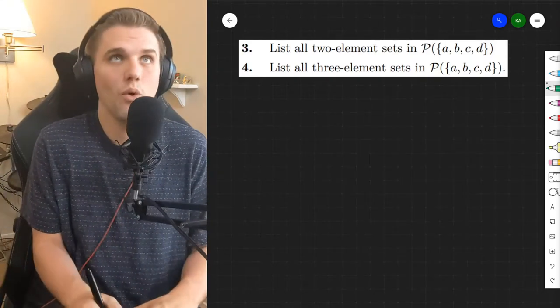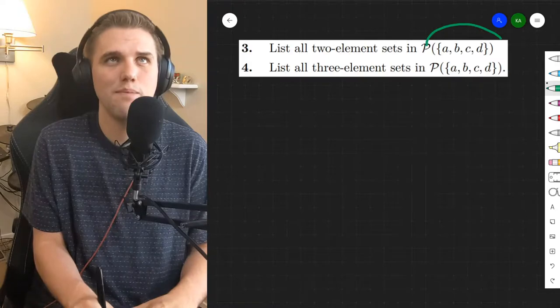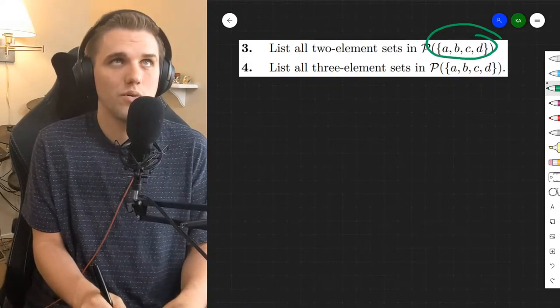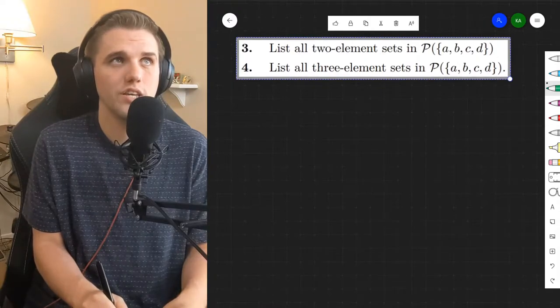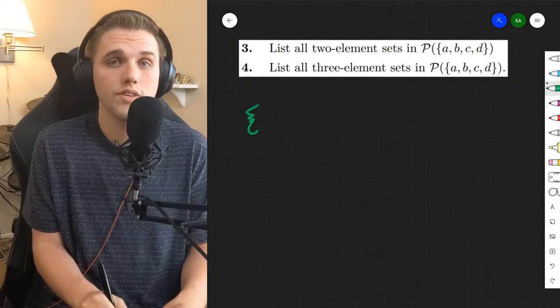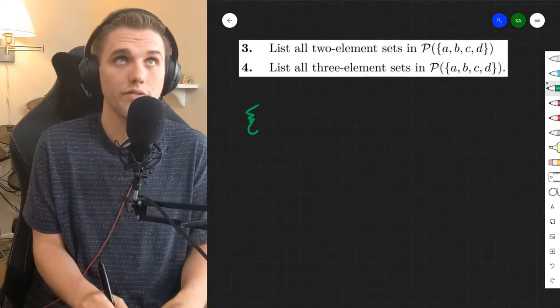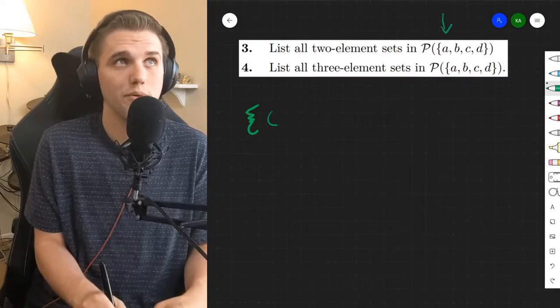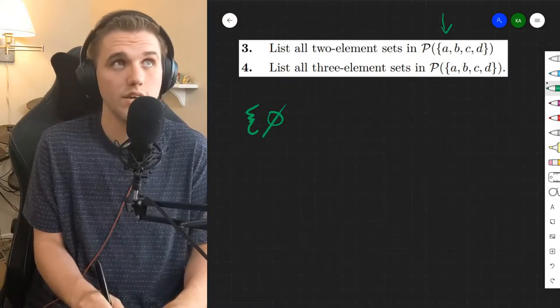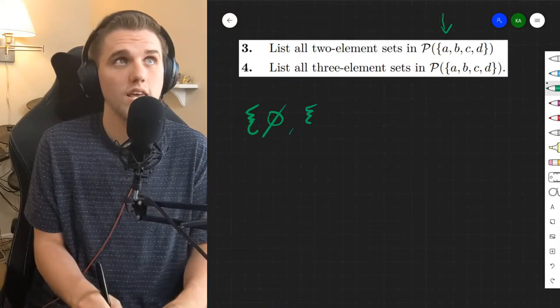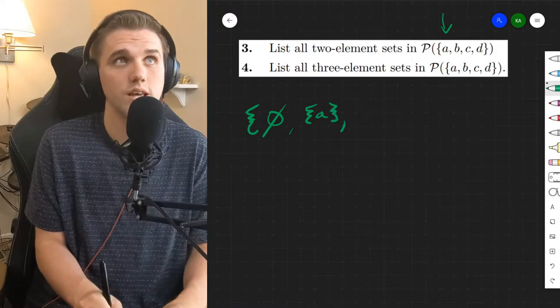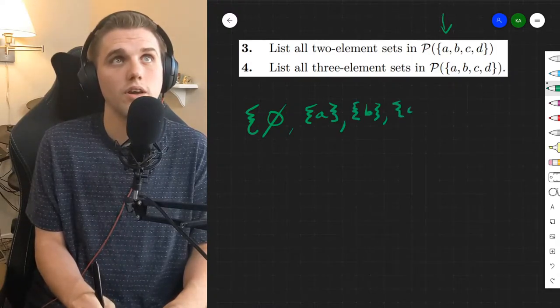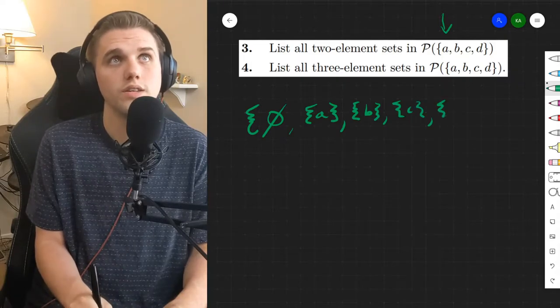So let's take a look at what the power set of {a, b, c, d} is. The power set by definition is a collection of all of the subsets of this set {a, b, c, d}. For example, the empty set is a subset of everything. The set containing a is a subset of {a, b, c, d}, and I could keep going for my one set items.